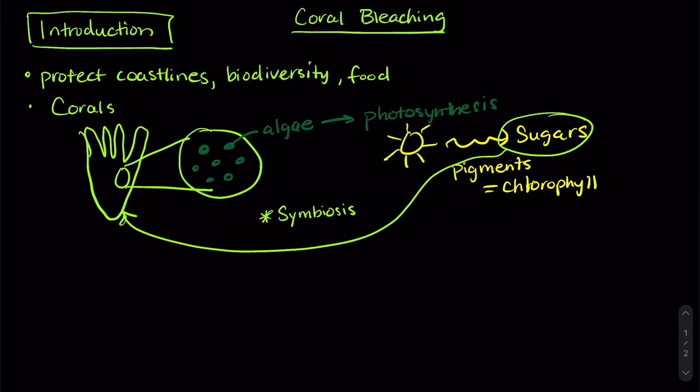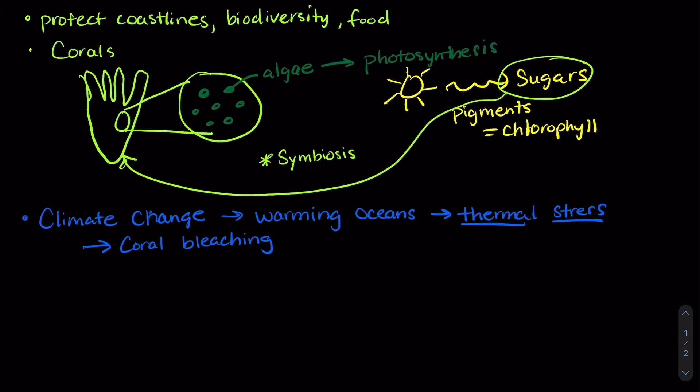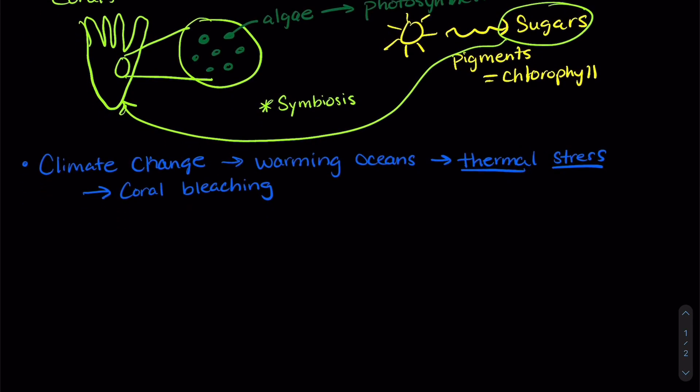Now the problem is that with climate change, coral reefs are in danger. And they're in danger because we have warming oceans. And when the ocean water warms, our corals and our algae are under thermal stress. And when they're under thermal stress, this is when coral bleaching happens. And that's when the algae actually leave the corals and the corals turn white because they don't have those pigments anymore.